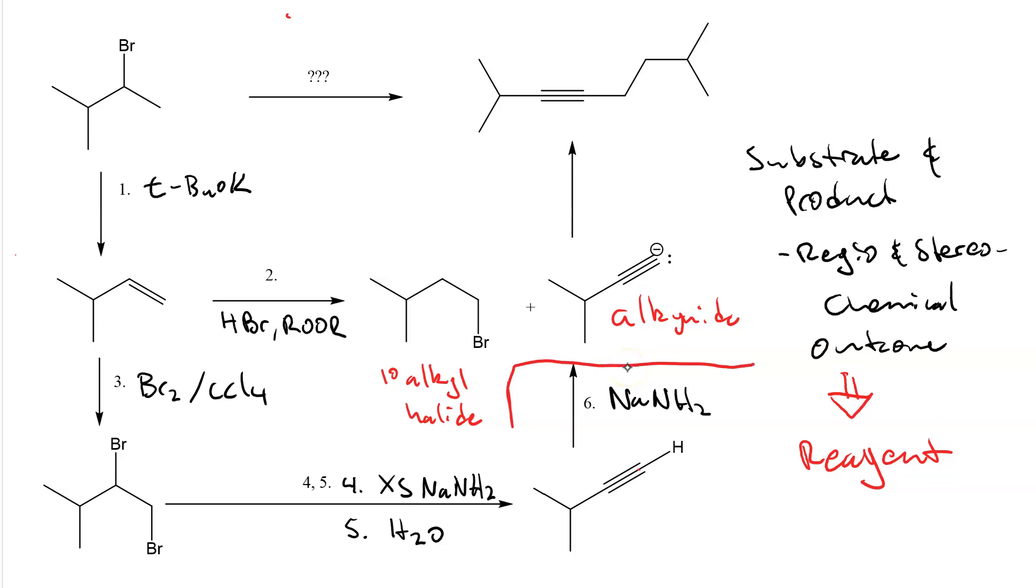In our final step, we react an alkynide with the primary alkyl halide to get an internal alkyne. This is an SN2 reaction. The alkynide does nucleophilic attack at the alpha carbon of the primary alkyl halide and the halogen leaves.